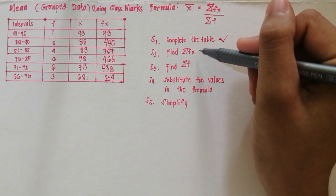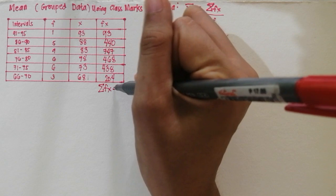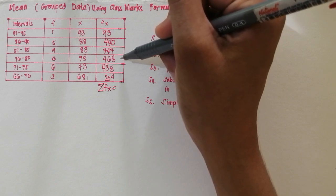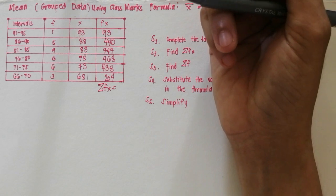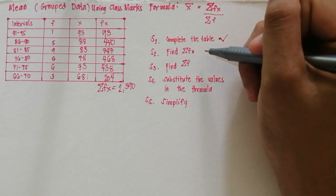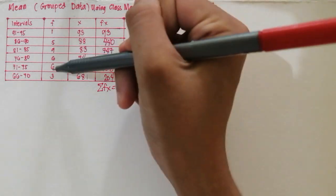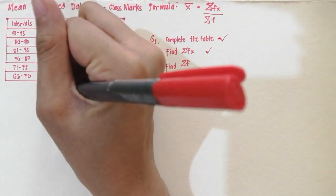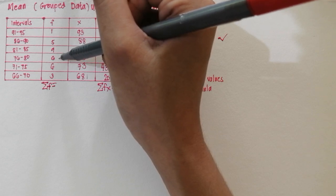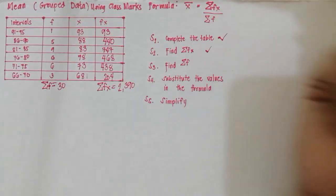Step 2 is to find the summation of FX. Adding all the FX values: 93 plus 440 plus 747 plus 468 plus 438 plus 204 gives 2,390. Step 3 is to find the summation of F. Adding all the frequencies: 1 plus 5 is 6, plus 9 is 15, plus 6 is 21, plus 6 is 27, plus 3 is 30. So the summation of F is 30.